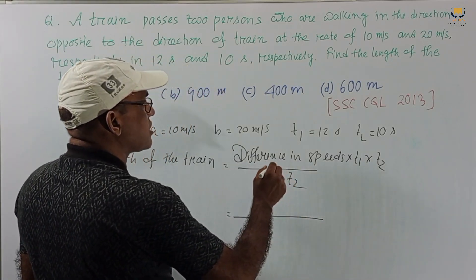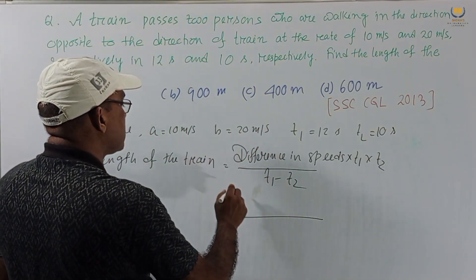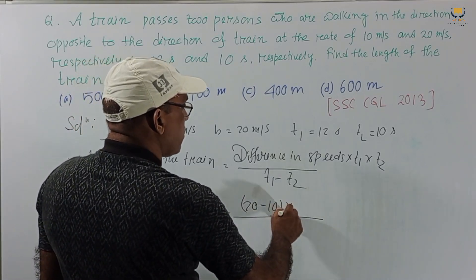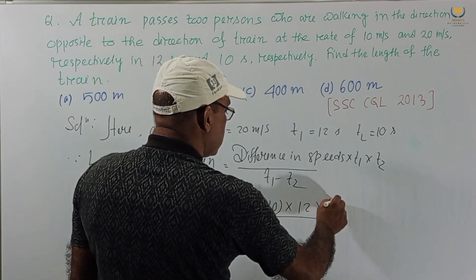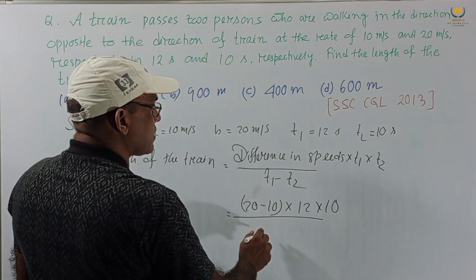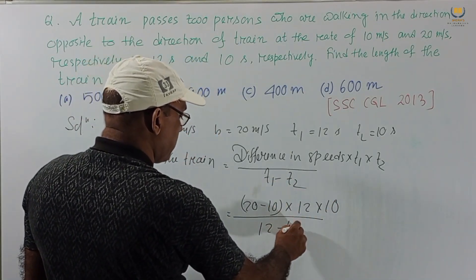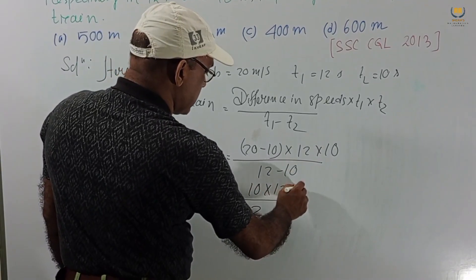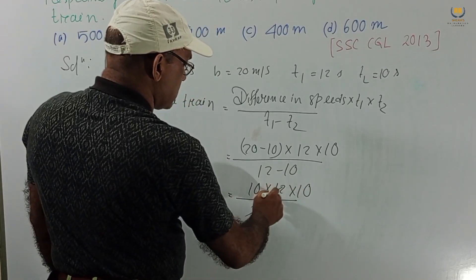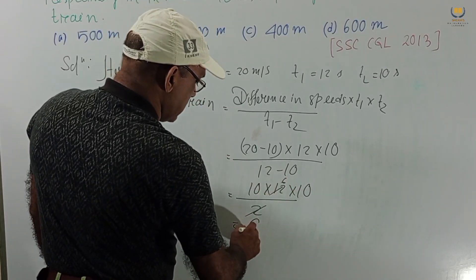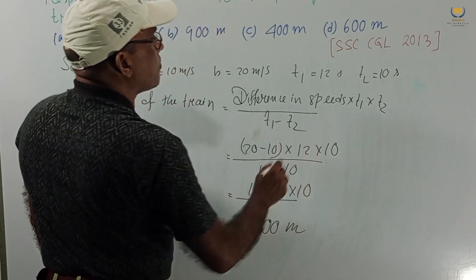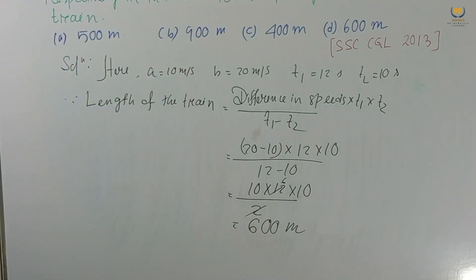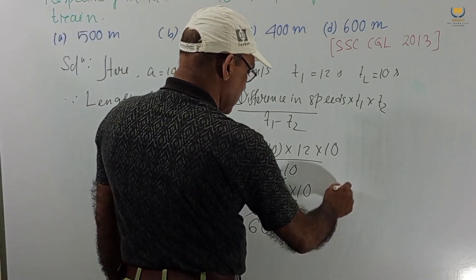Putting in the values: difference of speeds is 20 minus 10 equals 10; t1 is 12, t2 is 10, and t1 minus t2 is 12 minus 10 equals 2. So the calculation is 10 into 12 into 10 divided by 2, which gives 600 meters. The length of the train is 600 meters — this is our answer.